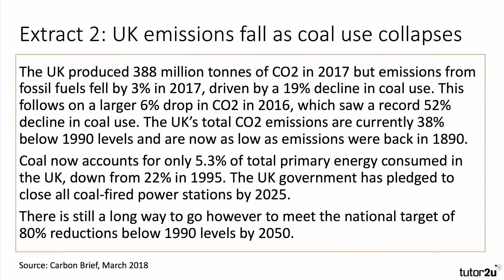Extract 2 shows that emissions in the UK are falling — they fell by 3% in 2017 and are now 38% below 1990 levels. One big factor has been a major fall in coal use, which now accounts for less than 6% of total primary energy consumed. The government has pledged to close all coal-fired power stations by 2025, but there's still a long way to go to meet the target of an 80% reduction in CO2 from 1990 levels.